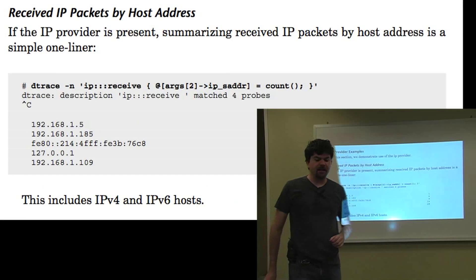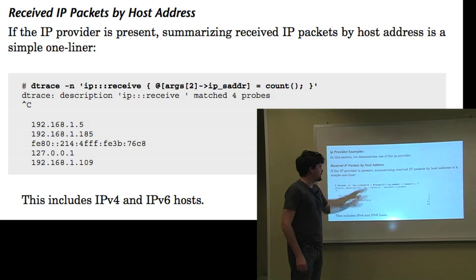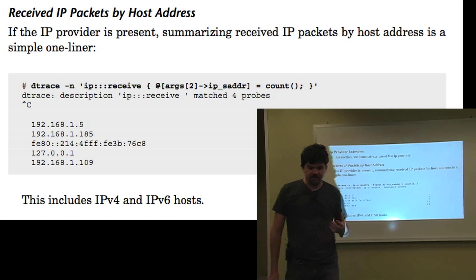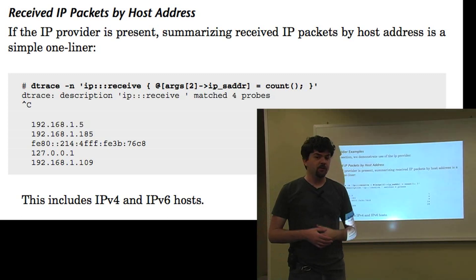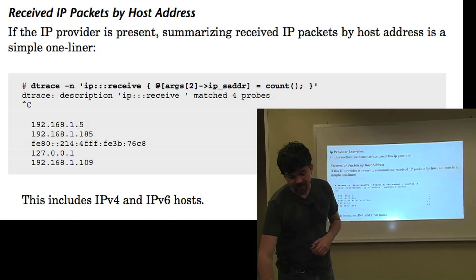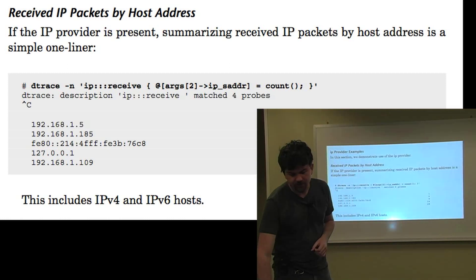For example, here's a one-liner that's doing IP receive and is aggregating by source address. This uses the DTrace IP provider, which should be in Solaris 11. It was not in Solaris 10. And you can now run this one-liner and all the related scripts with it as well.